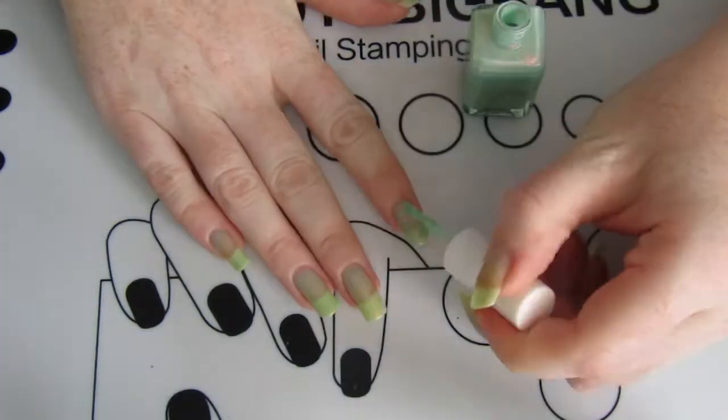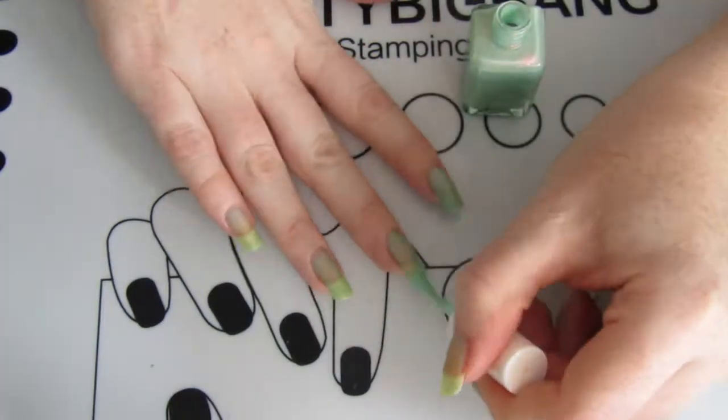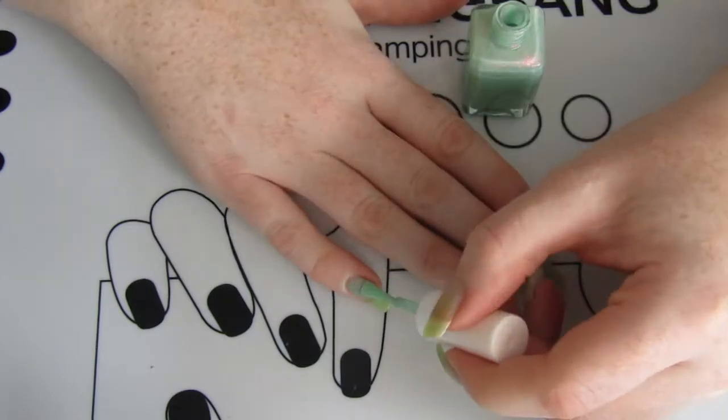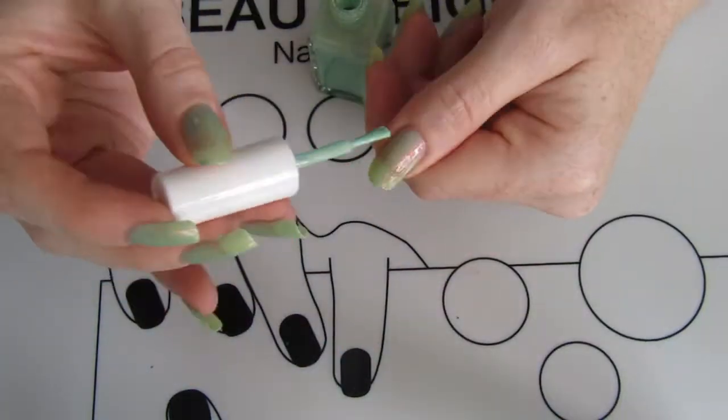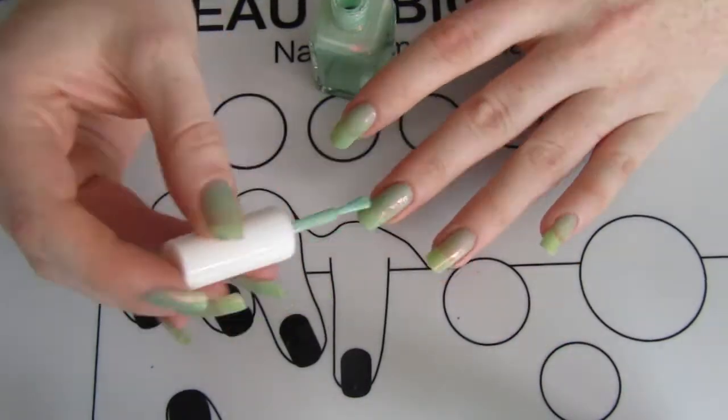It's a rabbit and carrot themed nail art. I'm having a bit of fun with some of my stamping plates. For the base, I selected a Glam Polish color, a light green called Alohomora.